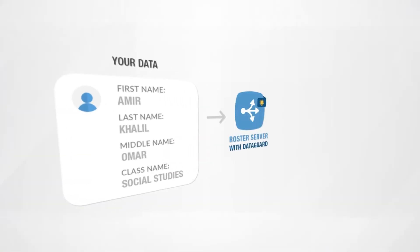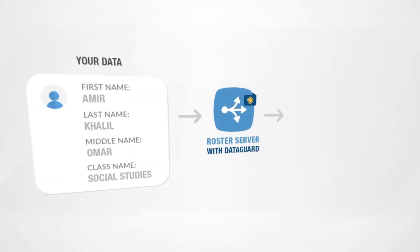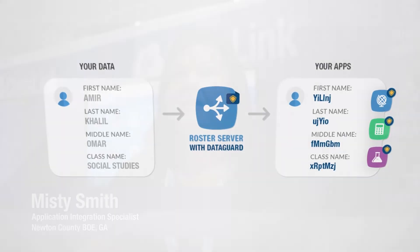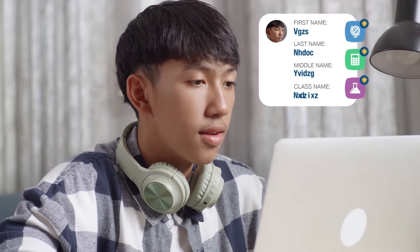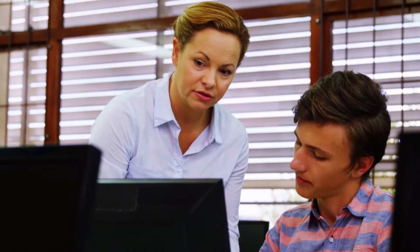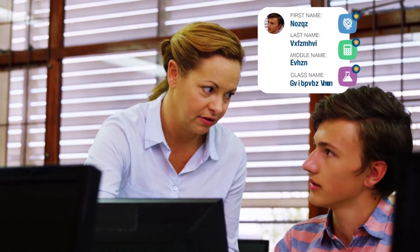ClassLink DataGuard is the ability to randomize information when you're working with vendors in ClassLink. DataGuard will allow us to share information on students without actually sharing key pieces of data, to keep our students' identity safe as well as our teachers and all of our staff members.